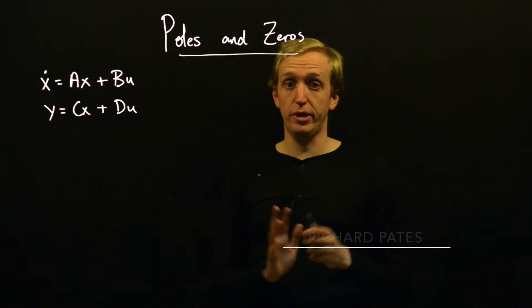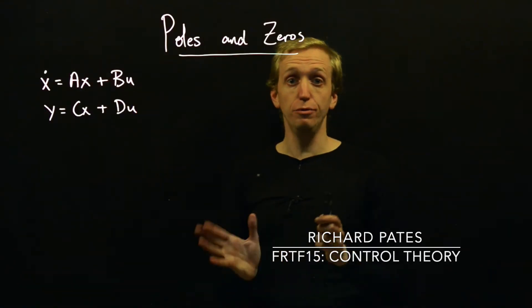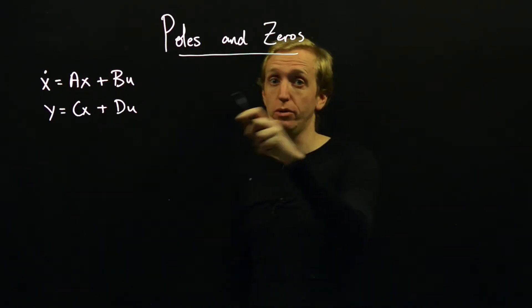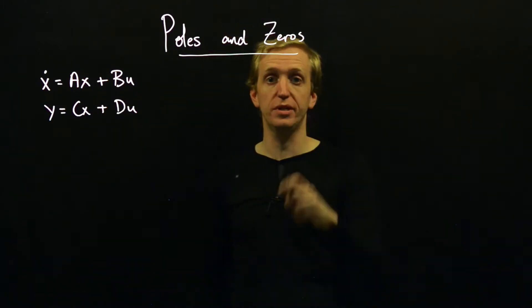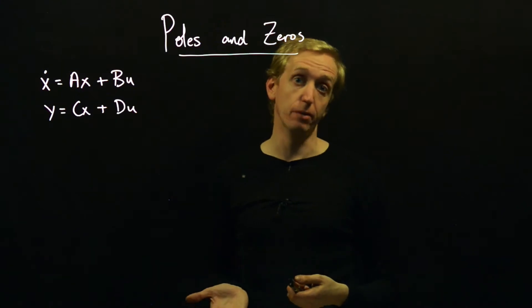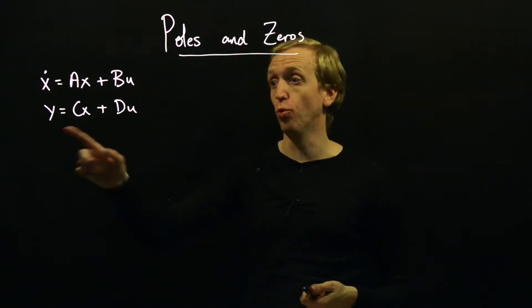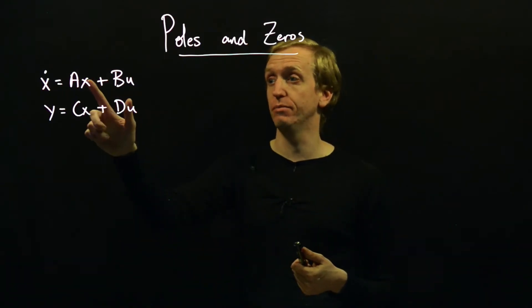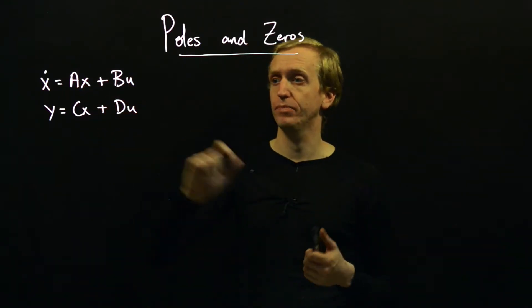Hello, right, we're now going to try and put two familiar concepts from transfer function descriptions into the state space setting as well. So we're going to look at system poles and zeros and in particular we're going to try to work out how to find them from a state space representation or what they correspond to in a state space representation in terms of the matrices A, B, C and D.